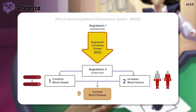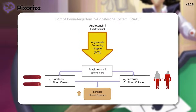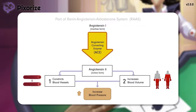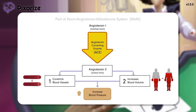Just think of the blood vessel as a garden hose. What happens if you constrict the hose and make it narrower? The water comes out with an increased pressure. And what happens if you turn up the water to increase the volume running through the hose? It also causes increased pressure. The RAS uses both of these methods — making blood vessels narrower and increasing blood volume — so that blood pressure increases.